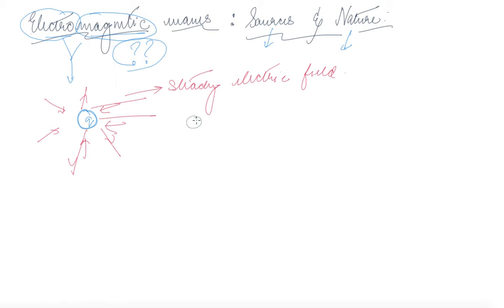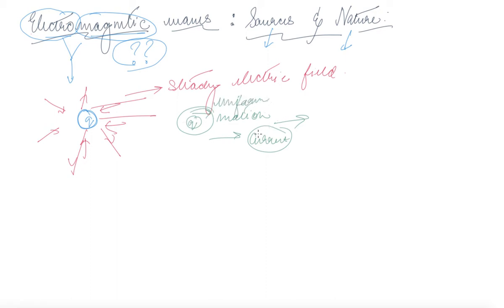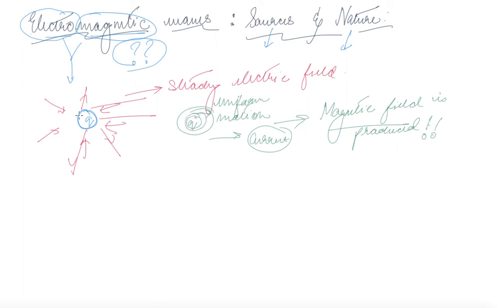What happens when the charge is moving? When the charge is in motion, we know that current is produced, and when there is current, a magnetic field is produced. So due to the uniform motion of a charge, a magnetic field is produced.